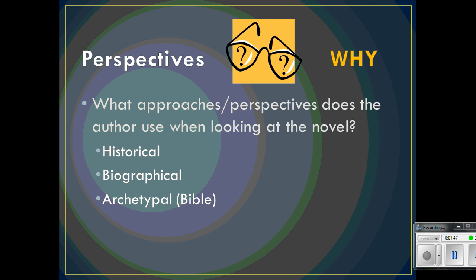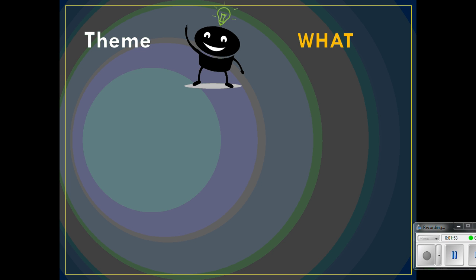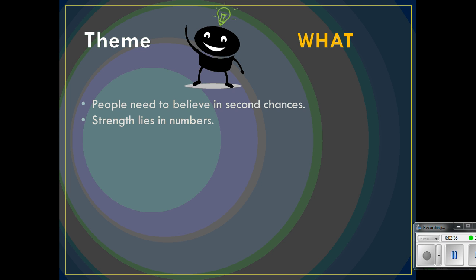Speaking of themes, the next thing we want to point out is that Jan Goggins talked about theme, and any good literary analysis is going to have a great identification of theme. She talked a lot about how people need to believe in second chances — that there's a lot riding on the fact that humanity needs hope to continue. She also talks about the fact that strength lies in numbers, that people need to have a collective sense of unity in order to continue on, and she talks about community-building strength in a society.